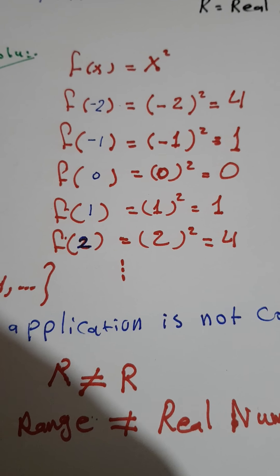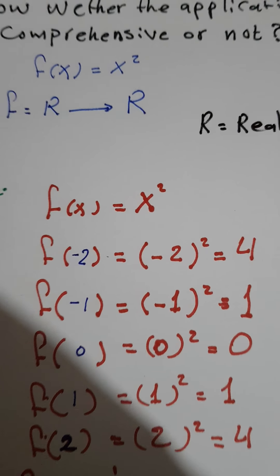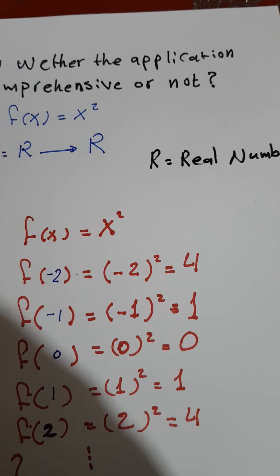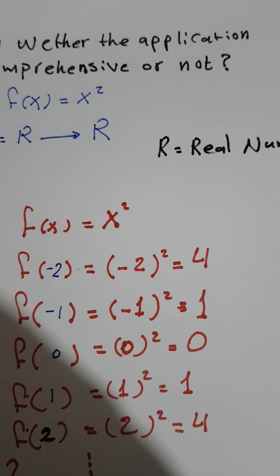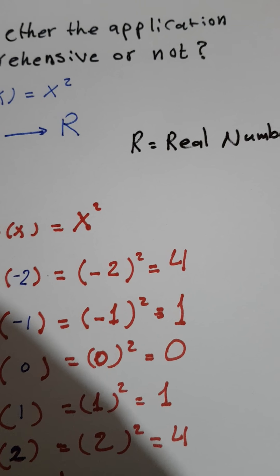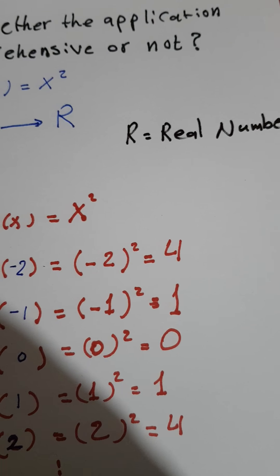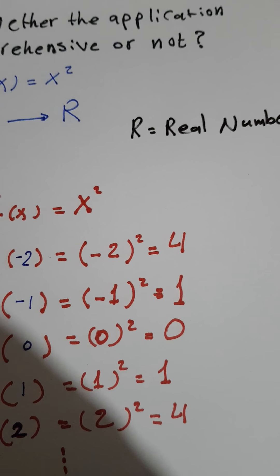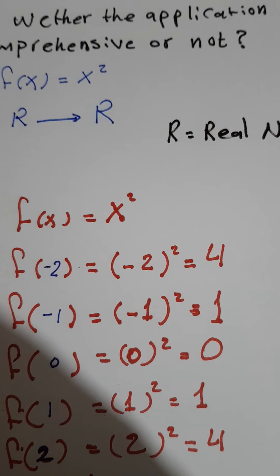To summarize: we understand that ℝ (real numbers) includes negative, zero, and positive numbers, while ℕ (natural numbers) contains only zero and positive numbers. The range does not equal ℝ, so the function f: ℝ → ℝ, f(x) = x² is not surjective. Thank you.